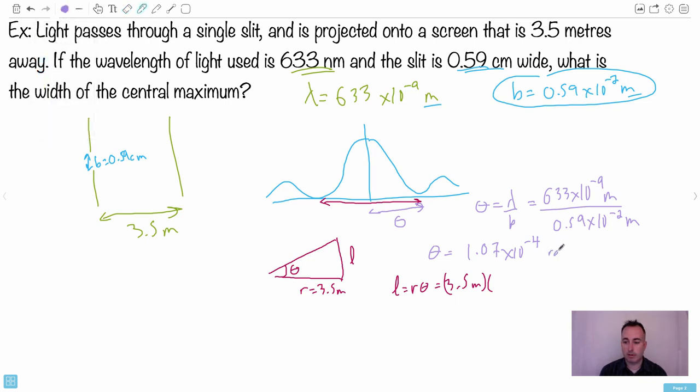So we have 3.5 meters times some radians. So times this number here, 1.07 times 10 to the minus 4. Let's see what we get here. This is the length. So I'm going to just take my answer from my calculator without rounding and keep the extra thing. So I get 3.75 times 10 to the minus 4 meters.